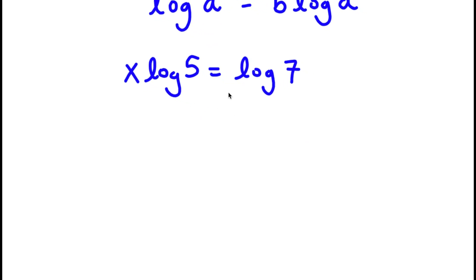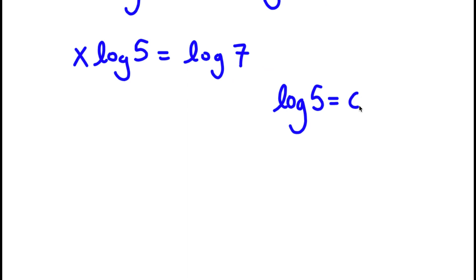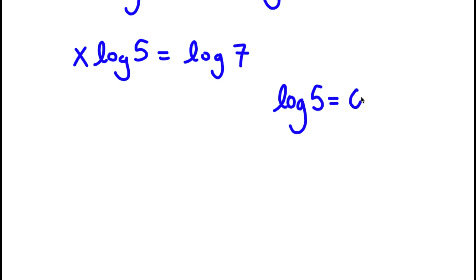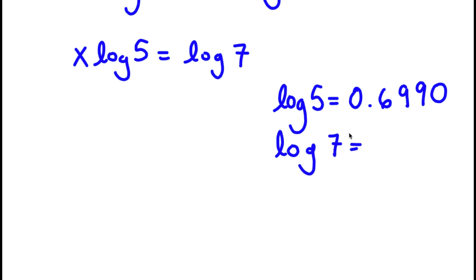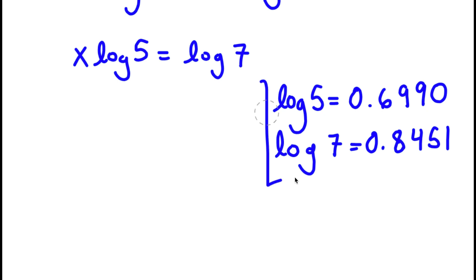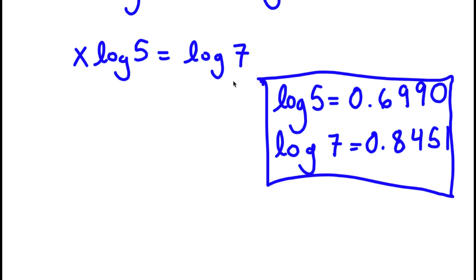Now, to simplify this, the value of log 5 is equal to approximately 0.6990, and log 7 is equal to 0.8451. So these are my two values for log 5 and log 7.